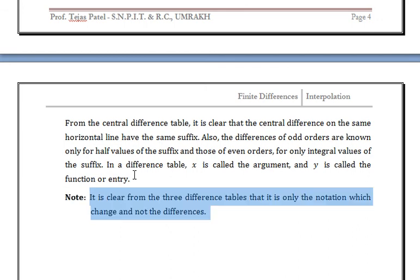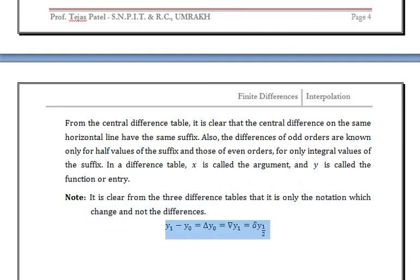Note that from all three differences tables we have: y1 - y0 = Δy0 = ∇y1 = δy(1/2). That is, only the notation changes, not the differences. Thank you.